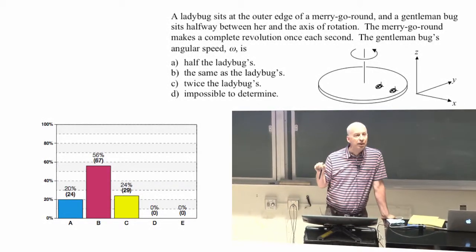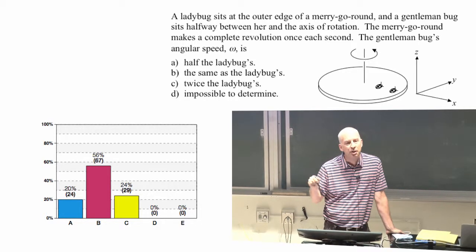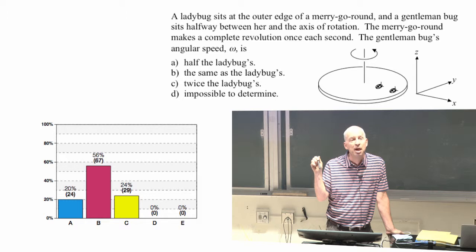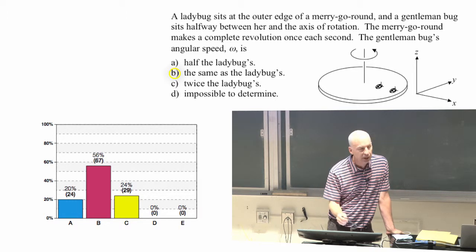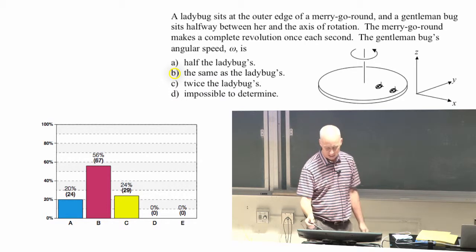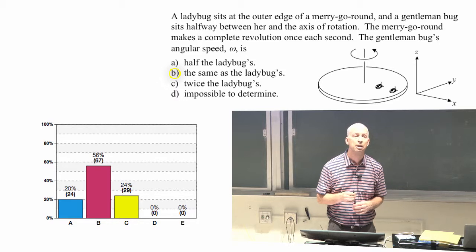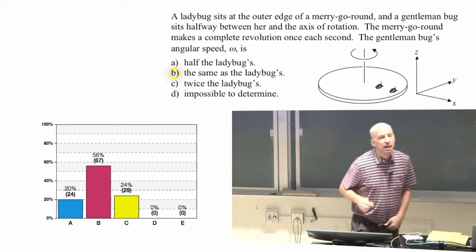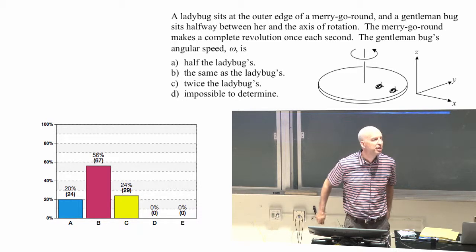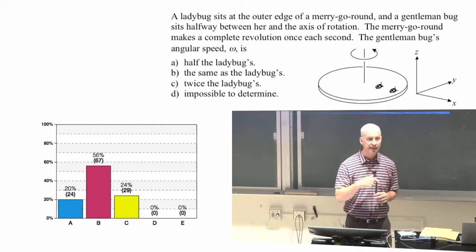The ladybug goes around one revolution, or two pi radians, in one second. The gentleman goes around two pi radians in the same amount of time — the angle per unit time is the same for both of them. The answer is B: the angular velocity is in radians per second. They're each doing one revolution per second, each going around two pi radians in one second — the same number.